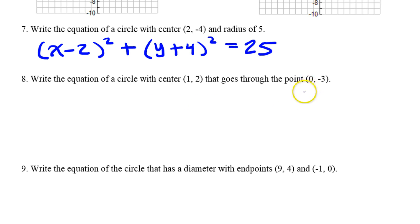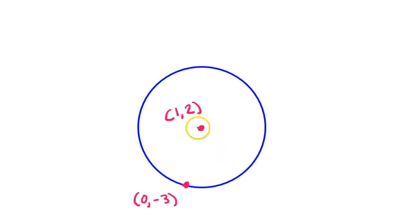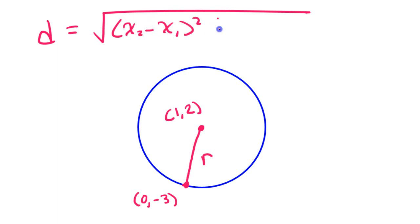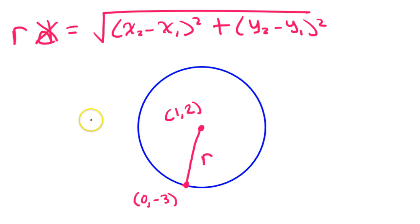Now number 8 is going to take a little bit more work. They gave us the center, but instead of giving us the radius, they gave us a point on the circle. Here's a possible picture. If the center is (1, 2) and a point on the circle is (0, -3), then it makes sense that the distance between these two points is going to be the radius. So if I can just find the distance between these two points — remember the distance formula. The distance formula says the distance between two points will be the square root of (x₂ - x₁)² + (y₂ - y₁)². I can just cross out distance and put radius, and use the distance formula in this context.